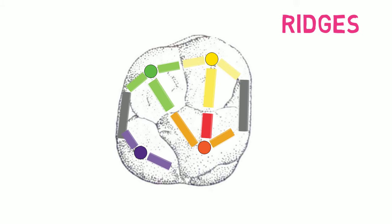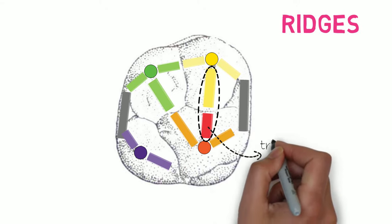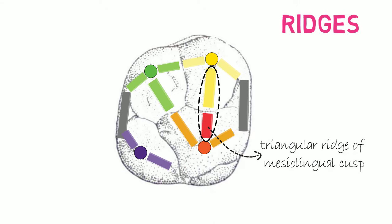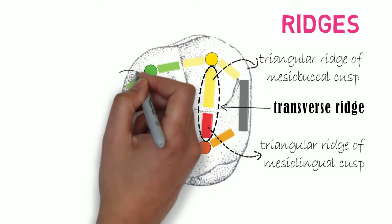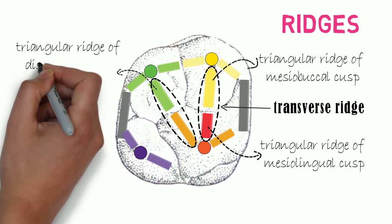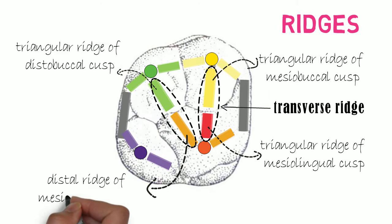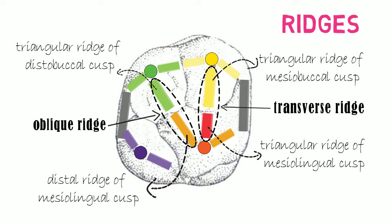Among all these ridges, two unions of four ridges can be seen. First, the union of the triangular ridge of the mesolingual cusp and the triangular ridge of the mesiobuccal cusp forms the transverse ridge. Second, the union of the triangular ridge of the distobuccal cusp and the distal ridge of the mesolingual cusp forms the oblique ridge. The oblique ridge is a unique feature of all maxillary molars.